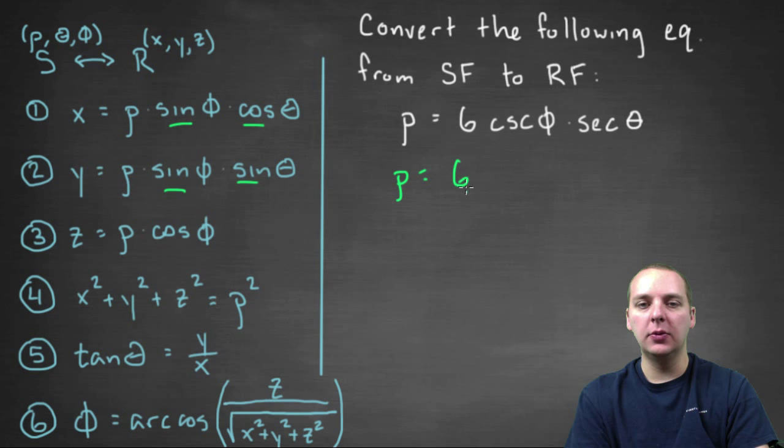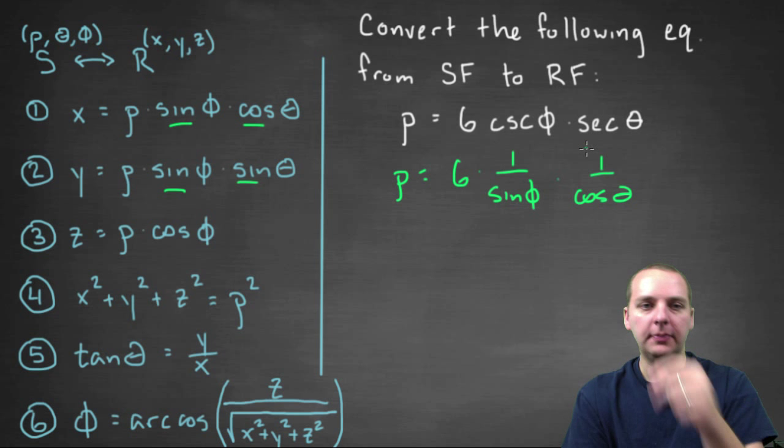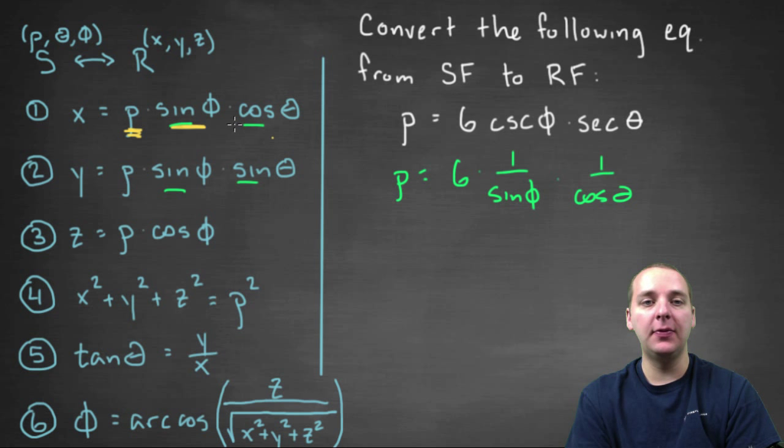So we get rho equals six times one over sine phi times one over cosine theta. That's just the definition of cosecant and secant. Now let's look through our list here. I do see one conversion in particular that has a rho, a sine phi, and a cosine theta, but it has to be rho times sine phi times cosine theta. But I think we can make that happen.